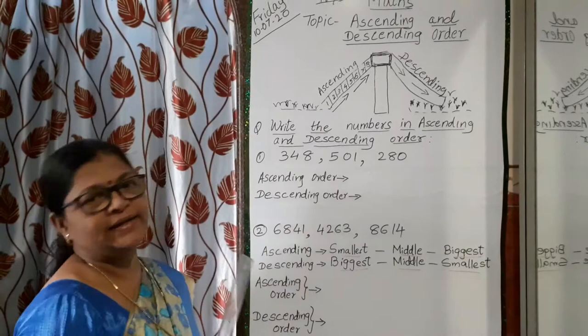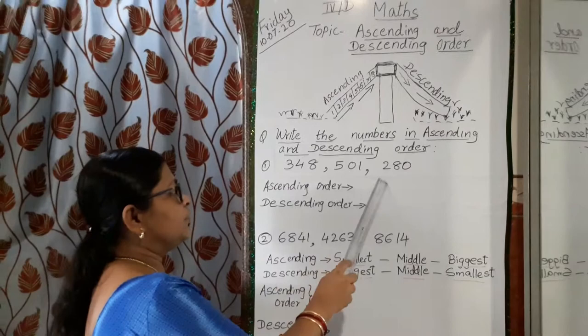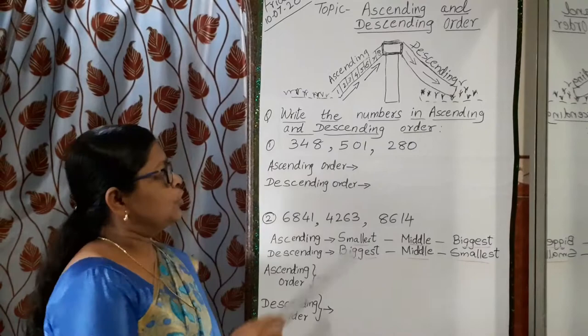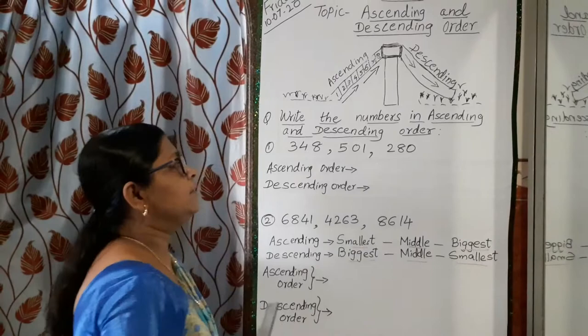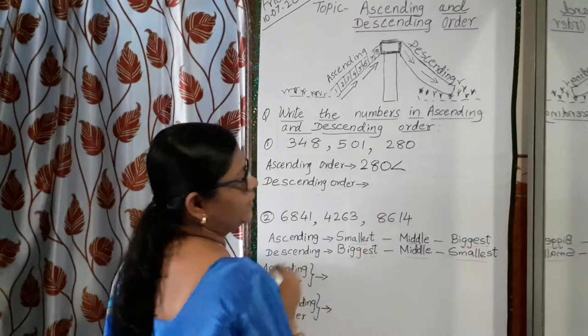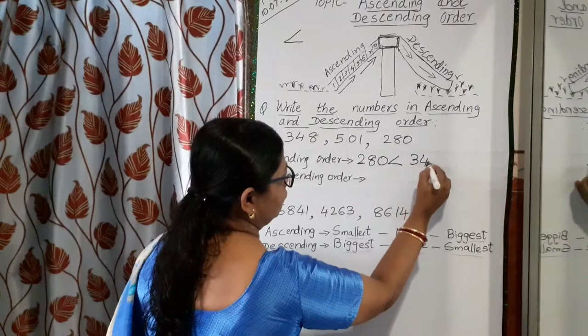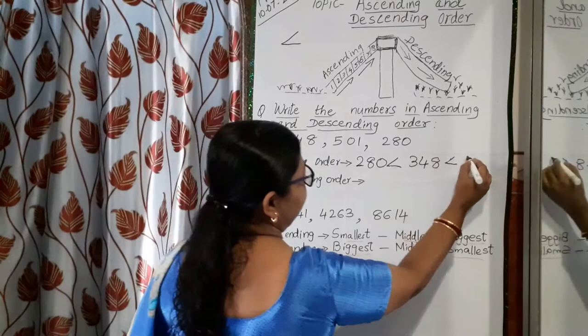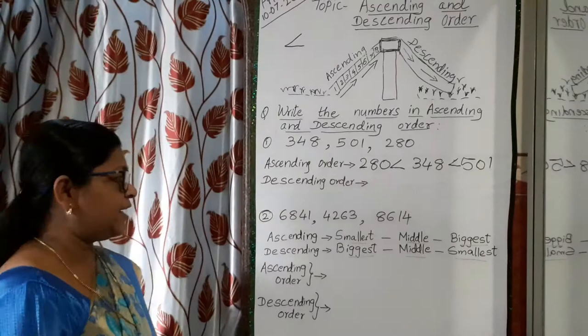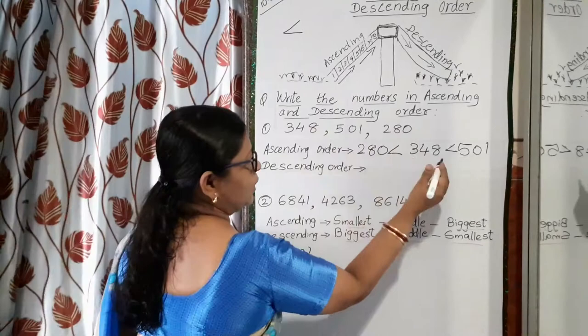So now what we have to do is write the numbers in ascending and descending order. The numbers given here are 348, 501, and 280. In ascending order, first we have to find the smallest number. Among 348, 501, and 280, the smallest number is 280. So we write 280 first, then 280 is smaller than 348, and 348 is smaller than 501. In ascending order, we write the smallest number first, then the middle number, then the biggest number.